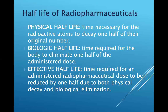There are three types of half-lives for radiopharmaceuticals. Physical half-life is the time necessary for the radioactive atoms to decay to one half of their original number. Biological half-life is the time required for the body to eliminate one half of the administered dose. Effective half-life is the time required for an administered radiopharmaceutical dose to be reduced by one half due to both physical decay and biological elimination.